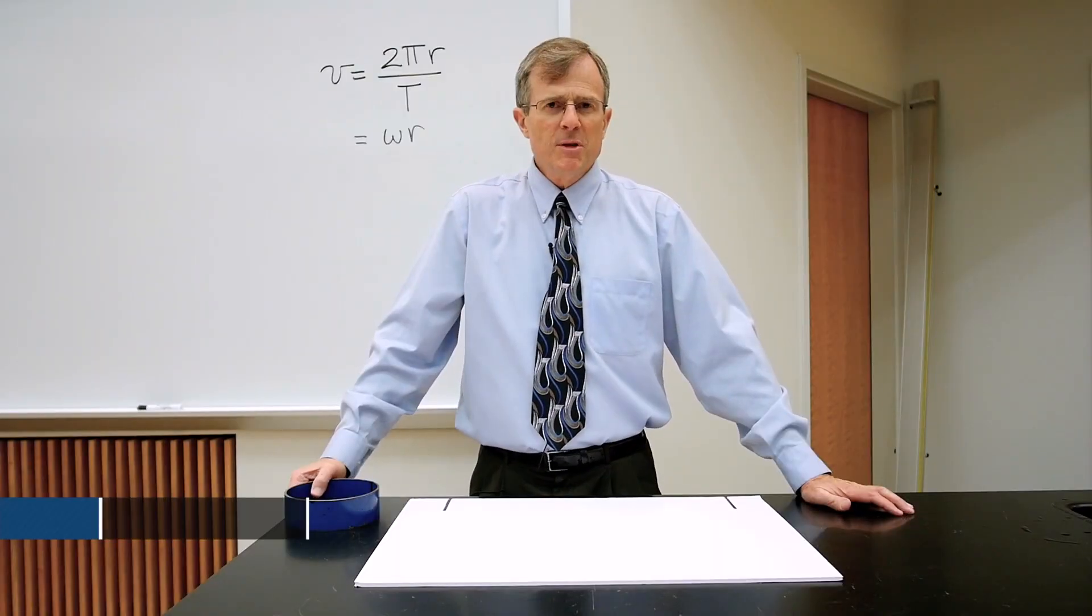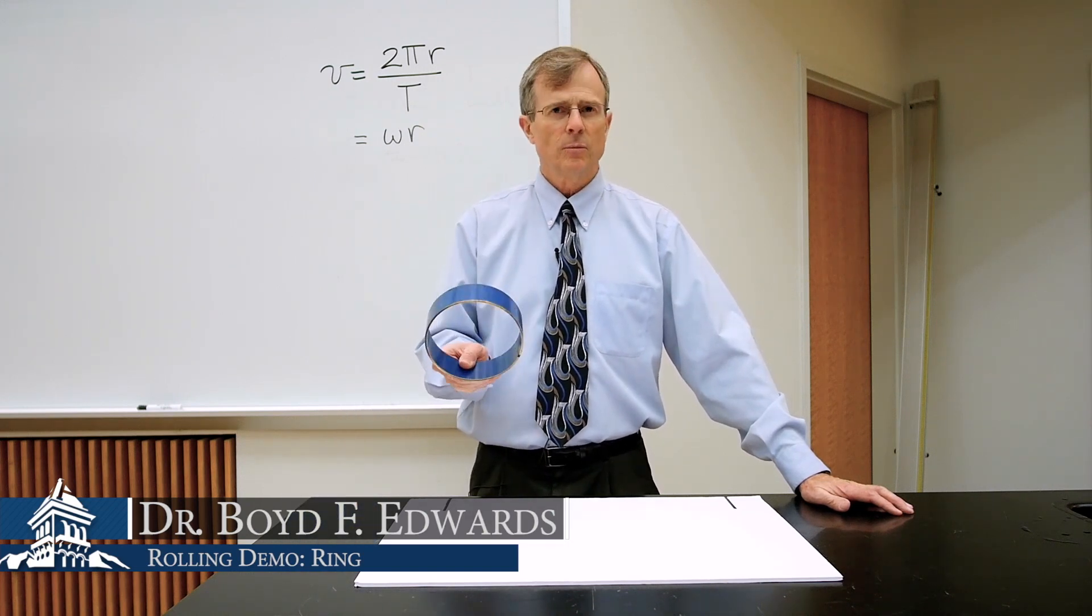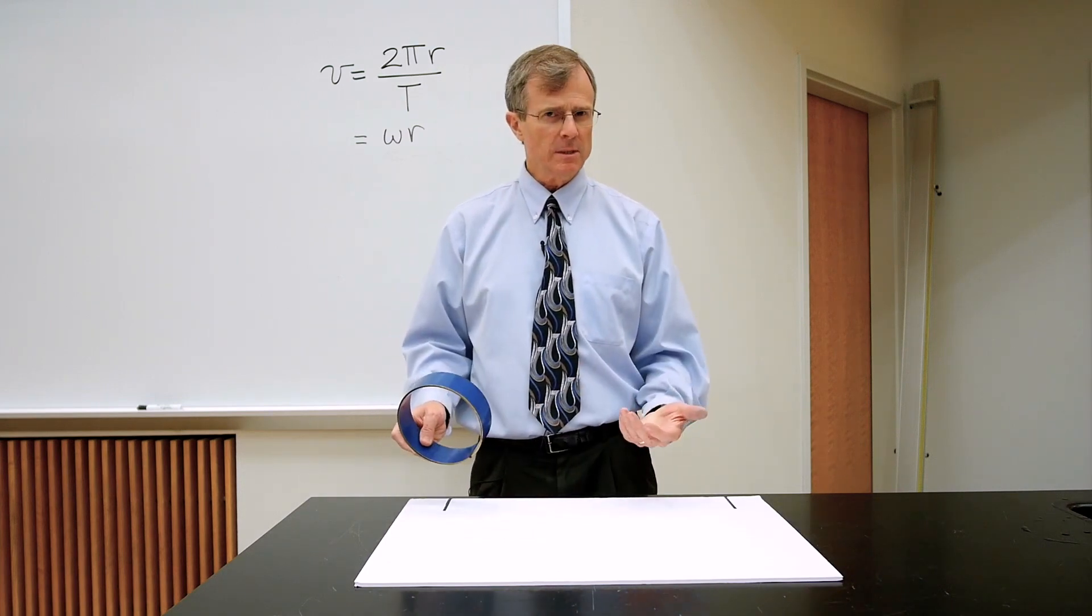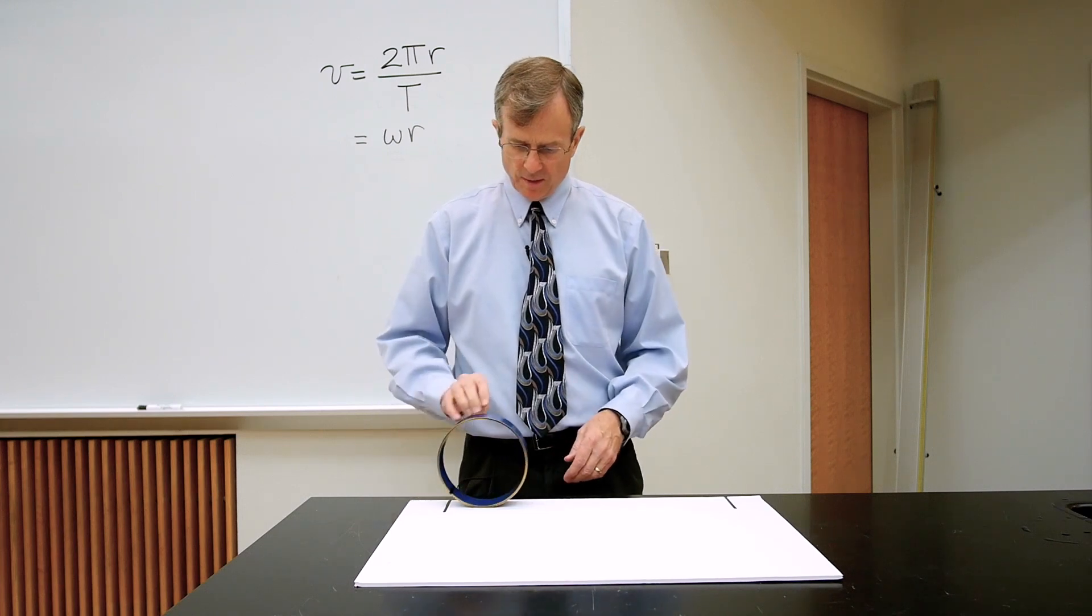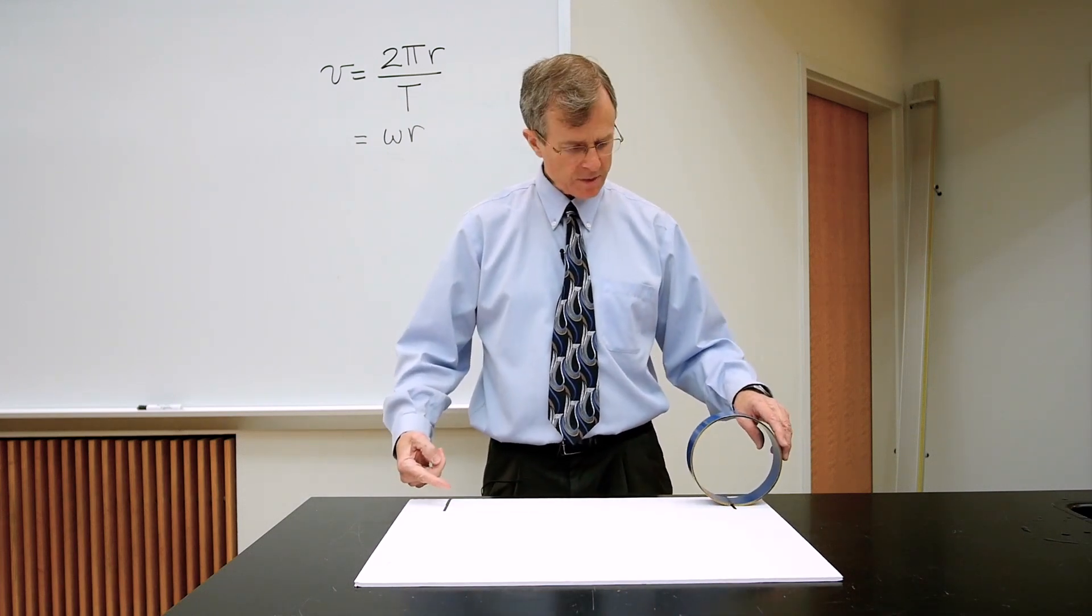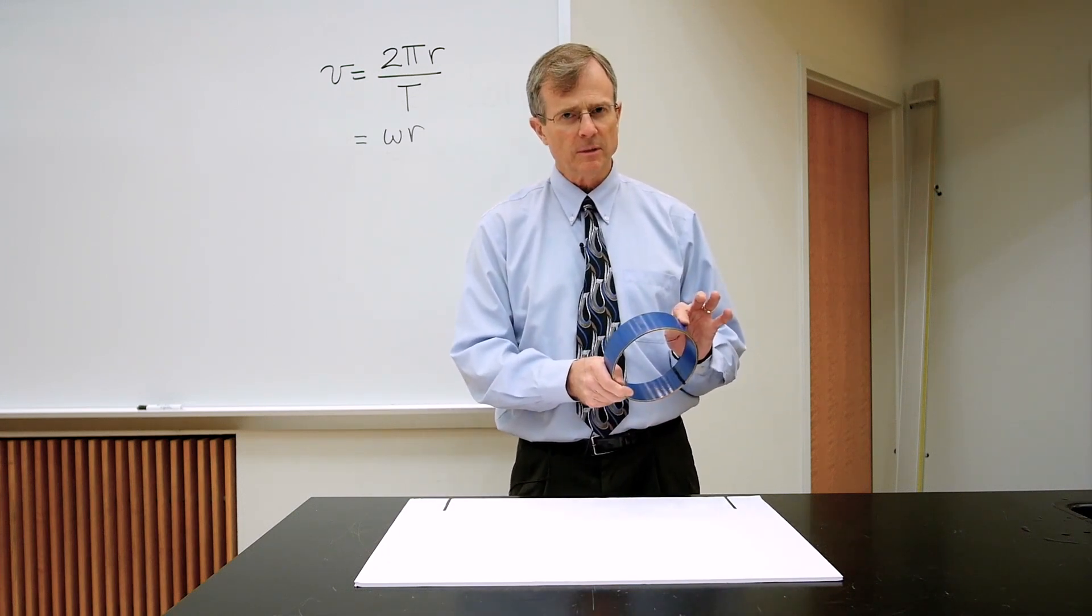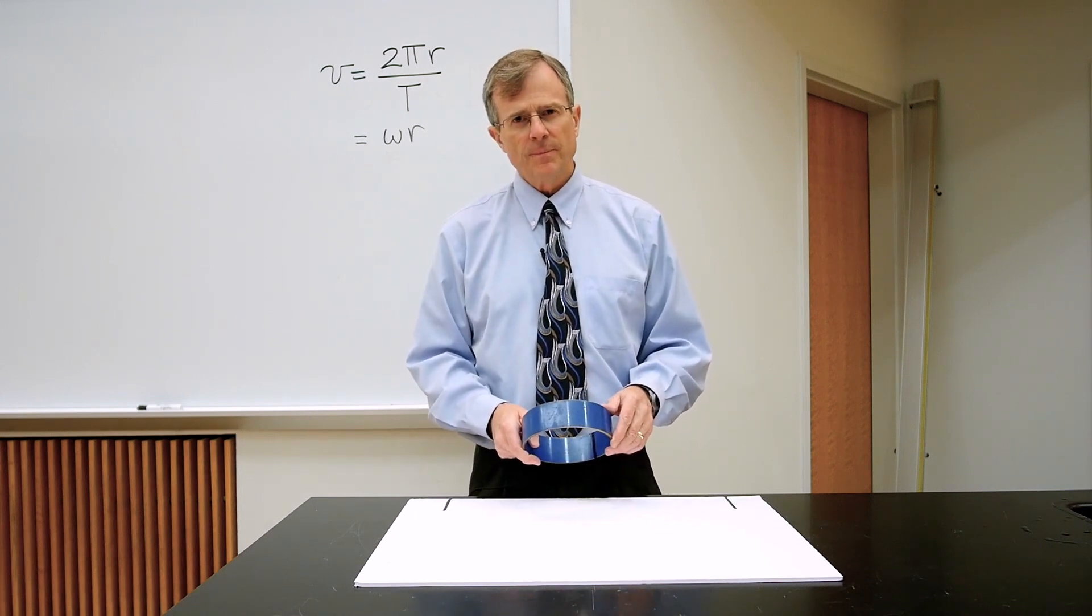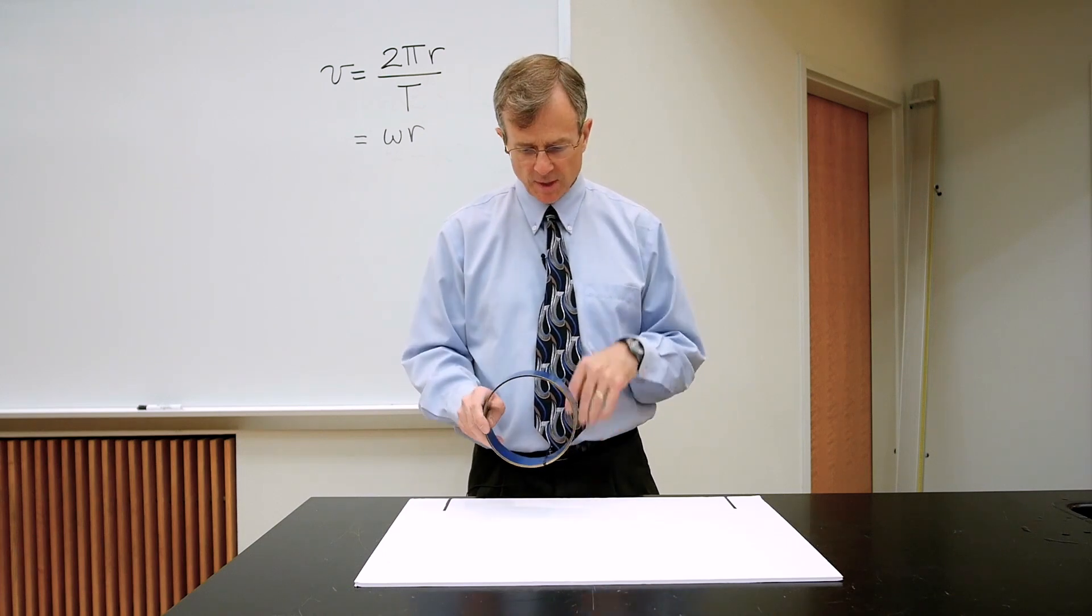I'm going to demonstrate rolling motion of this ring. As a ring rolls along a surface without slipping, it travels a distance equal to the circumference of the circle each time the rotation completes one complete rotation.